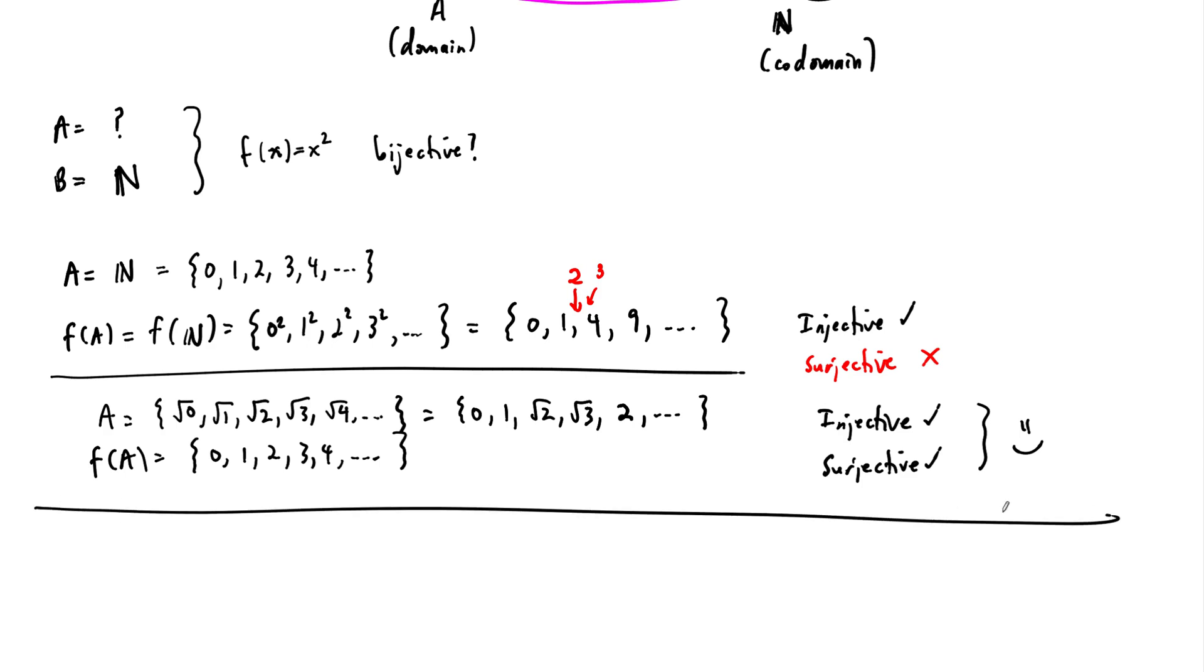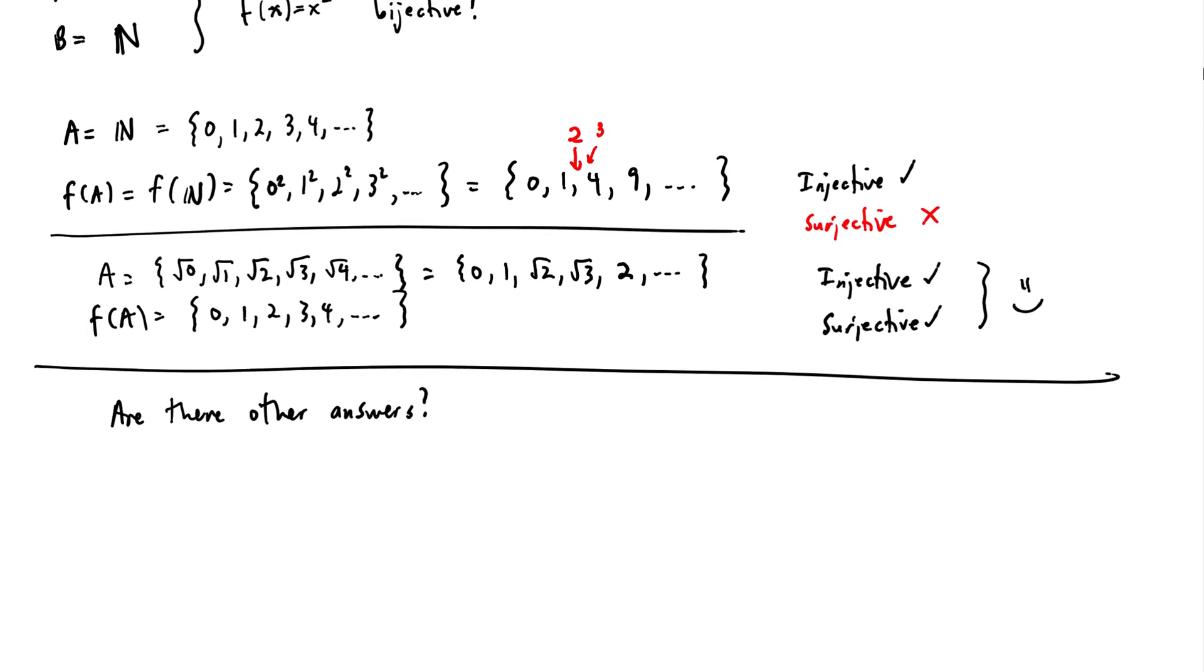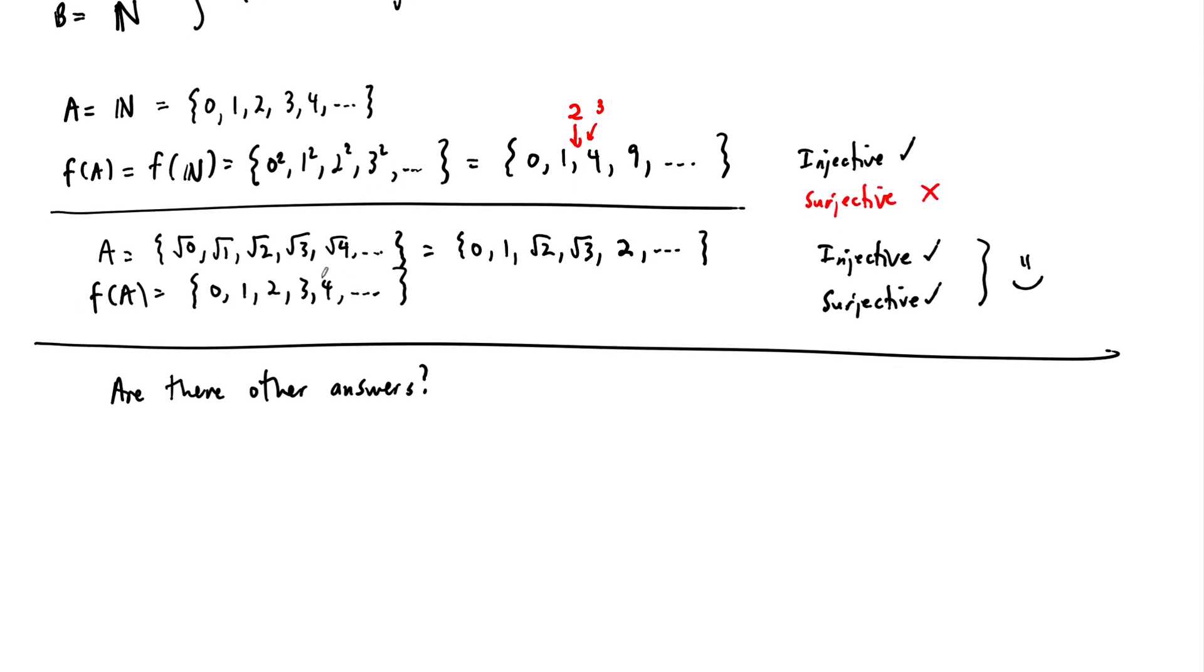Now, is it the only answer? This was the second part of the question. Are there other answers? You can probably guess that there are, because we know from calculus or previous courses that when you square a number, the output is always positive. So the answer here is yes.